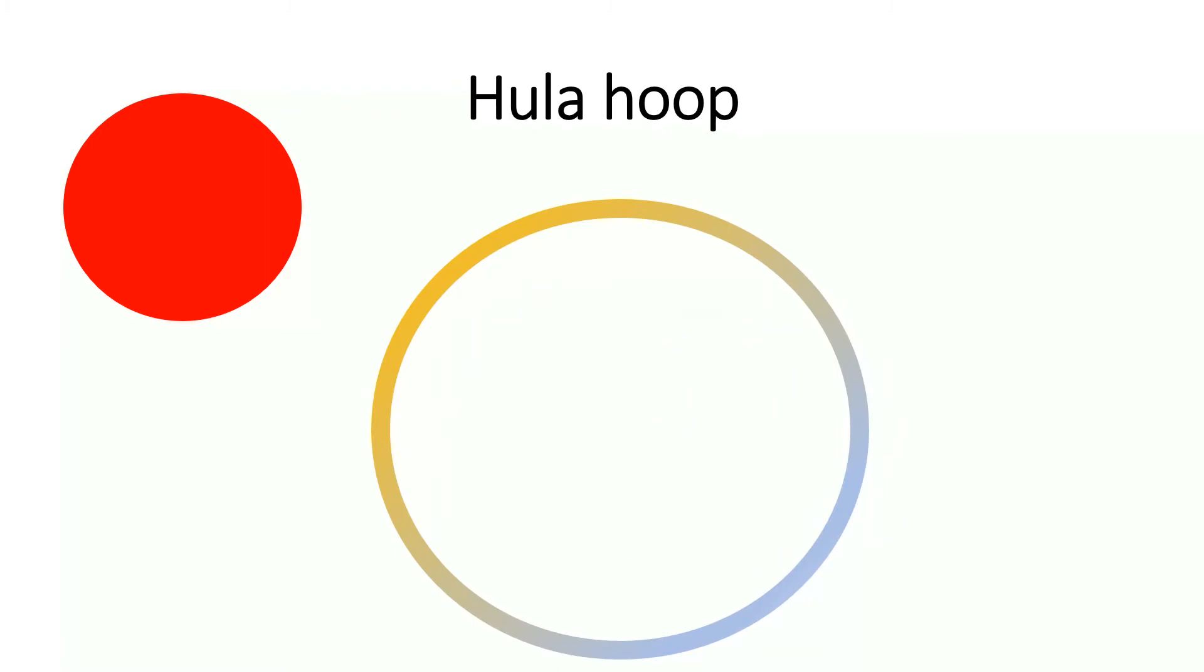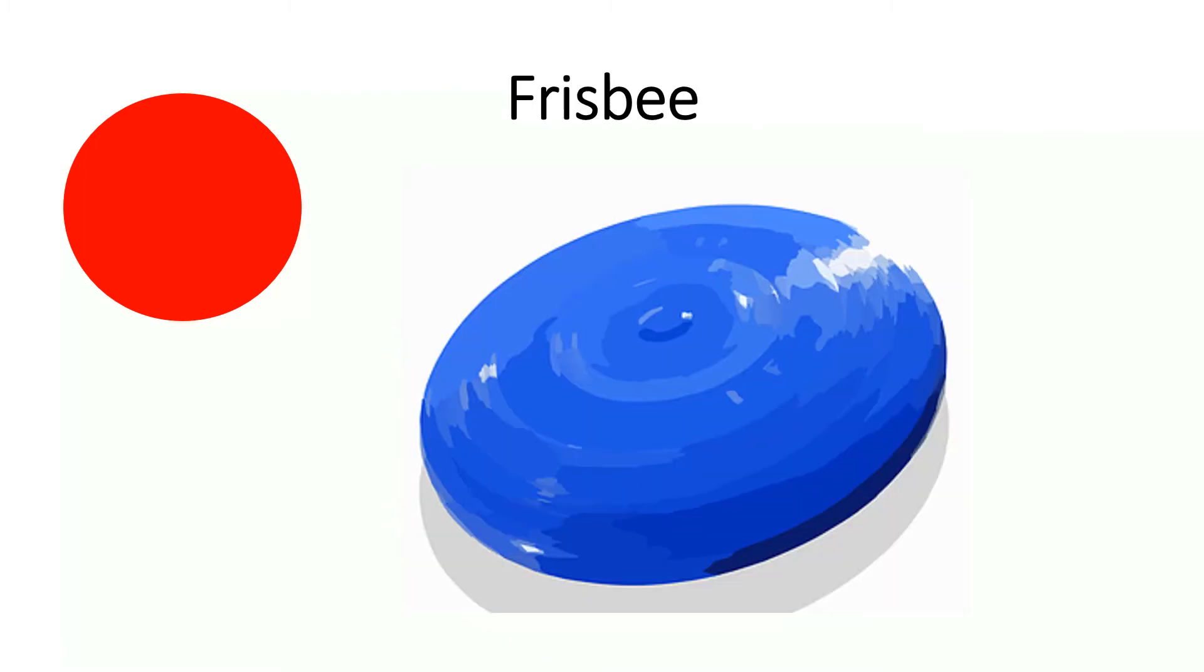Hula hoop is also a circle in shape. Frisbee is a circle in shape.